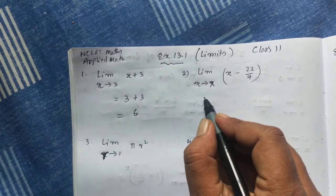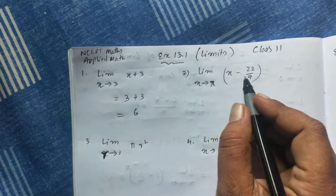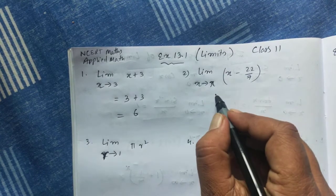Here also, we can do it directly. Limit x tends to pi — instead of x, we can put pi.